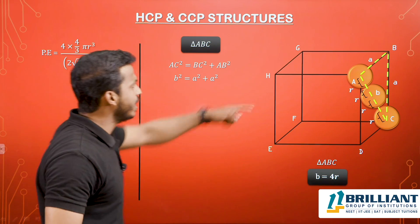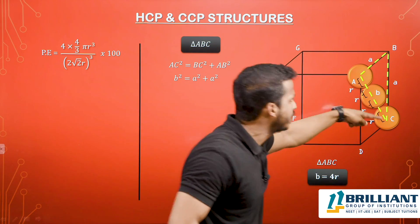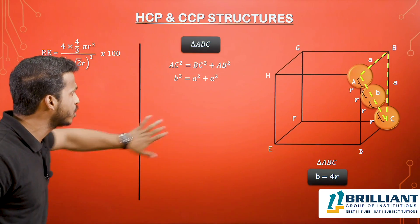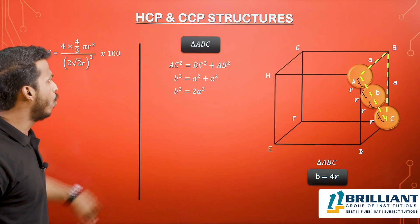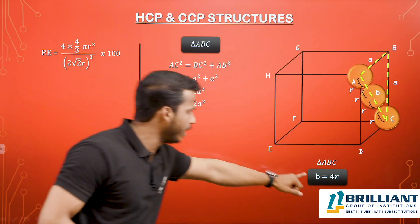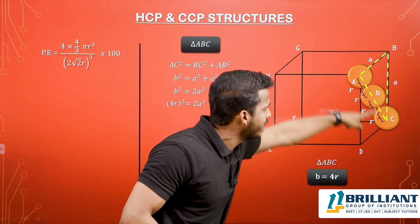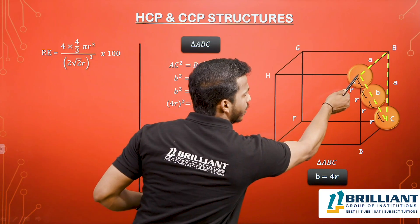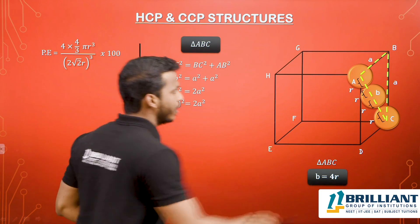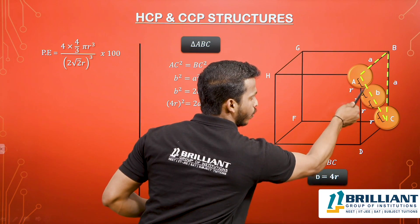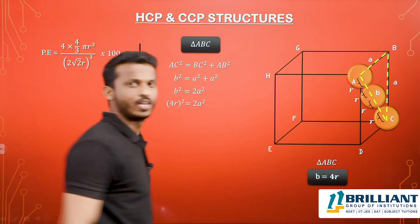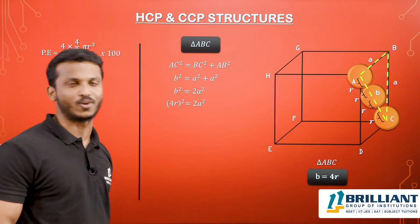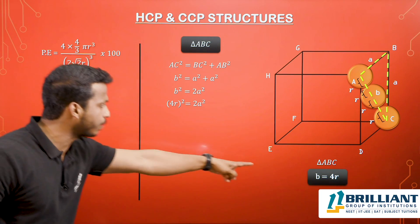The face diagonal length B passes through two half-spheres at the corners and one complete sphere at the face center: half radius + full diameter + half radius = R + 2R + R = 4R. Therefore B = 4R.